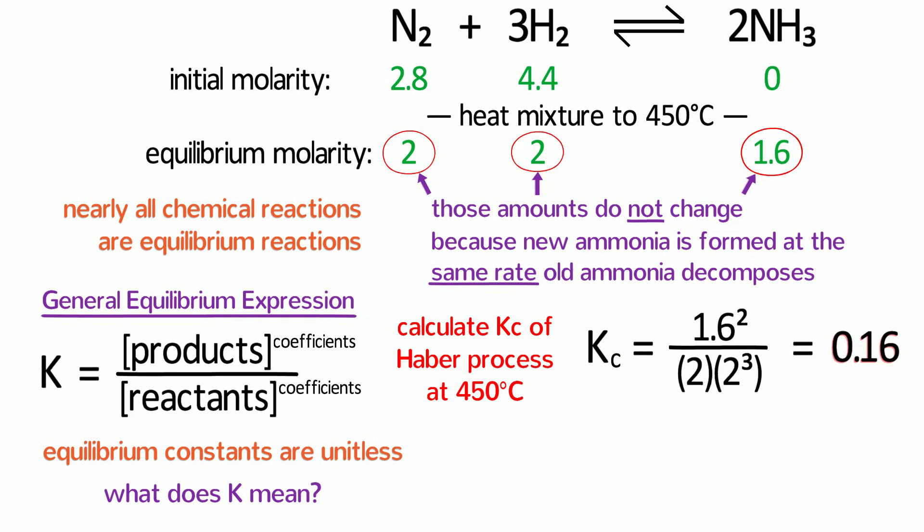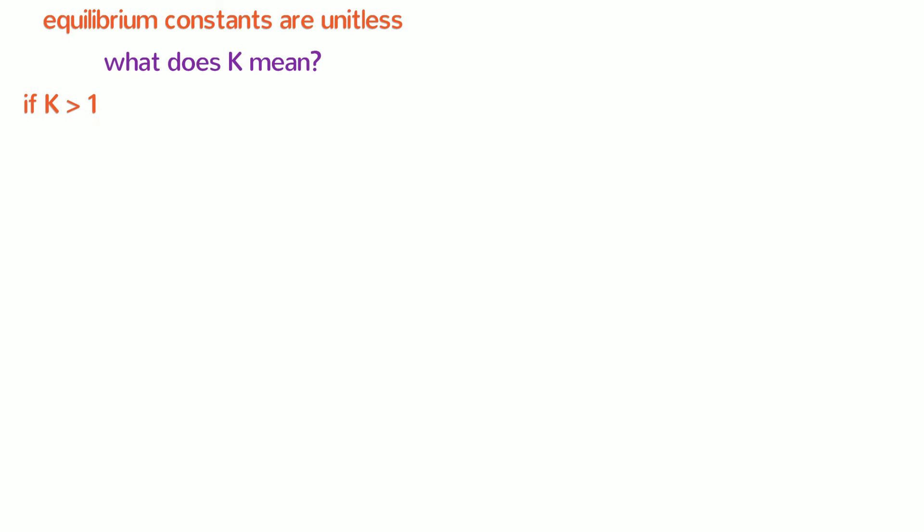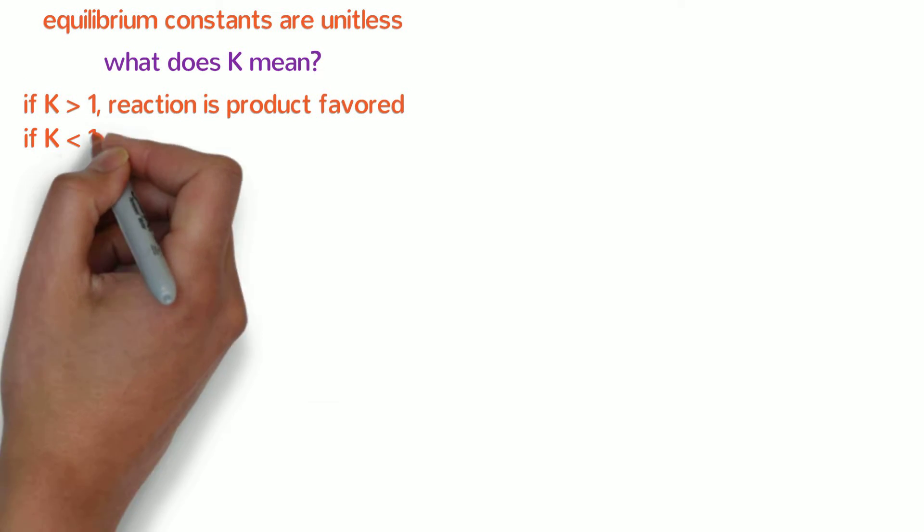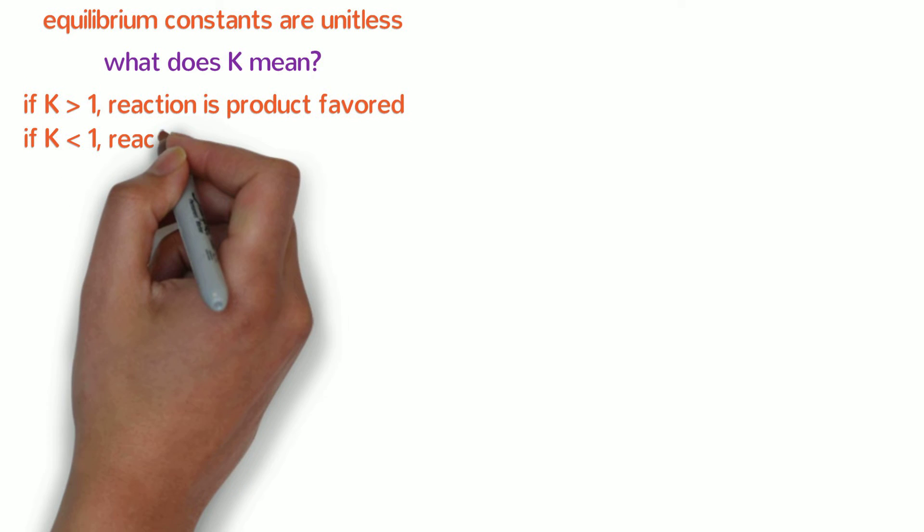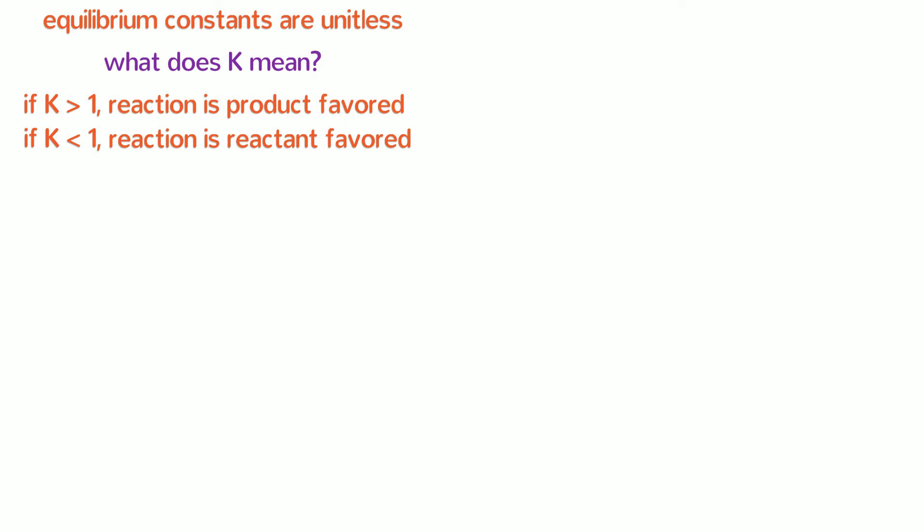A large equilibrium constant, that is, if K is greater than 1, means that the reaction is product favored. It will tend to make more products than reactants. A small equilibrium constant, that is, if K is less than 1, means that the reaction is reactant favored, and it will tend to make less products than reactants.